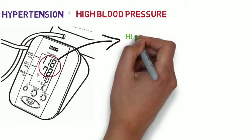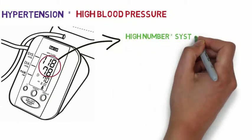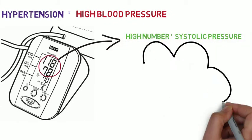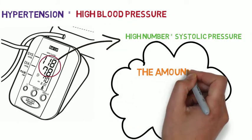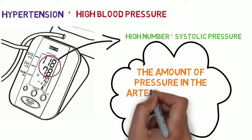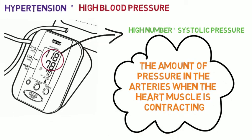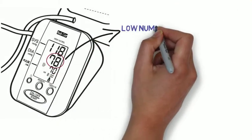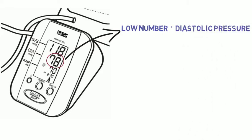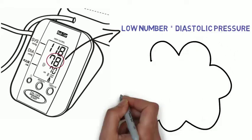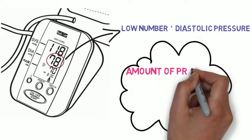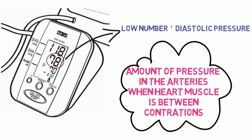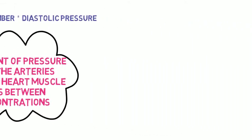The higher number shown is known as systolic pressure. This is the amount of force or pressure in the arteries when the heart muscle is contracting. The lower number is known as diastolic pressure. This is the amount of pressure in the arteries when the heart muscle is between contractions.